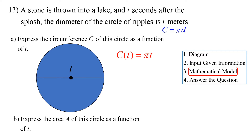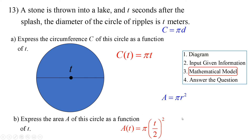Part b: express the area of the circle as a function of t. Area equals pi r squared. The radius is t over 2, so A(t) equals pi times (t/2) squared, which equals pi times t squared over 4.